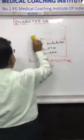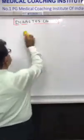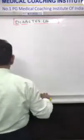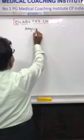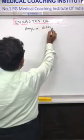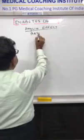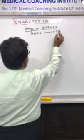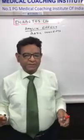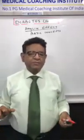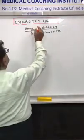Now we have another effect — the amylin effect. Let's see what this effect is and what drugs we have for it. The second new concept is the amylin effect. Again, we first learn the basic concepts about the physiology.